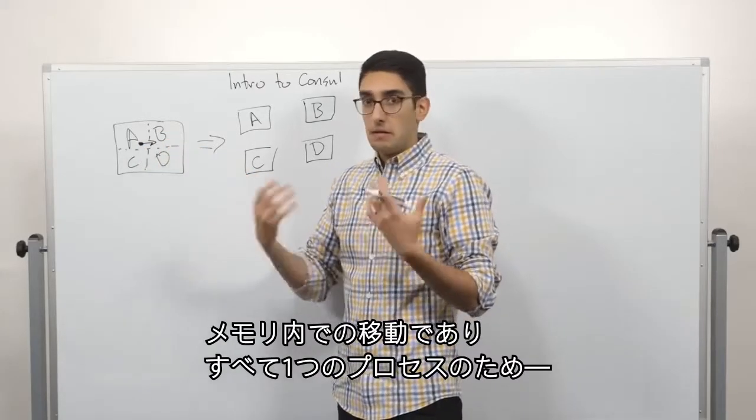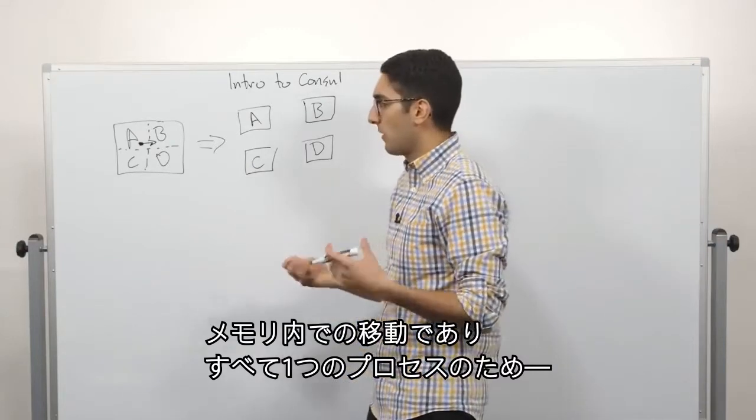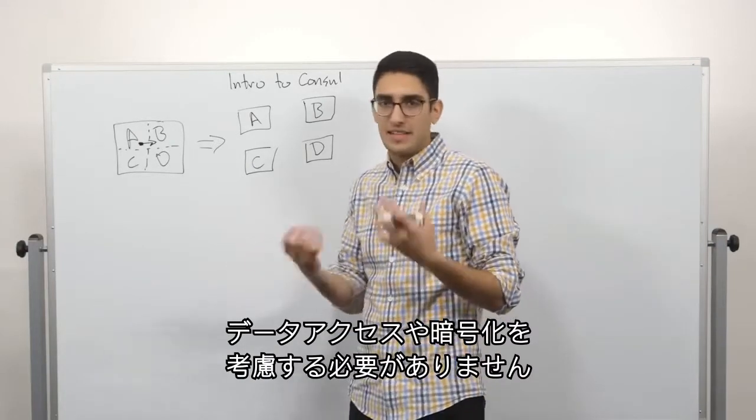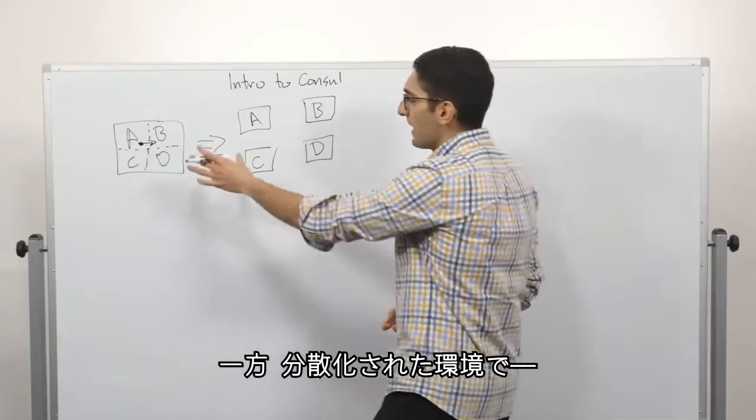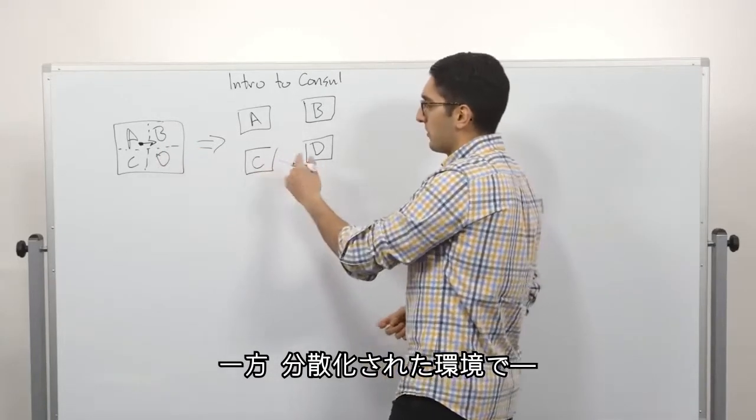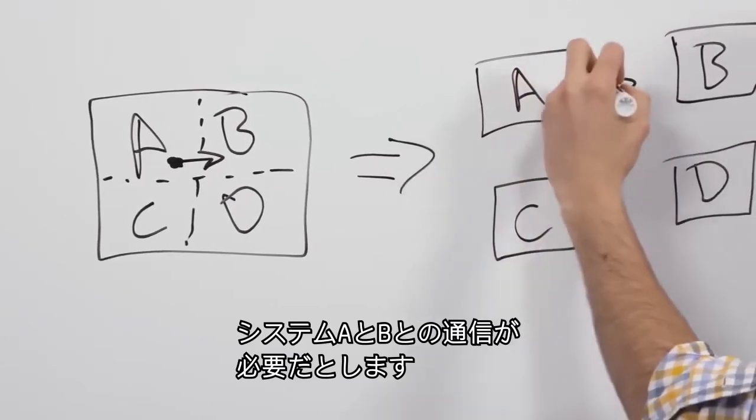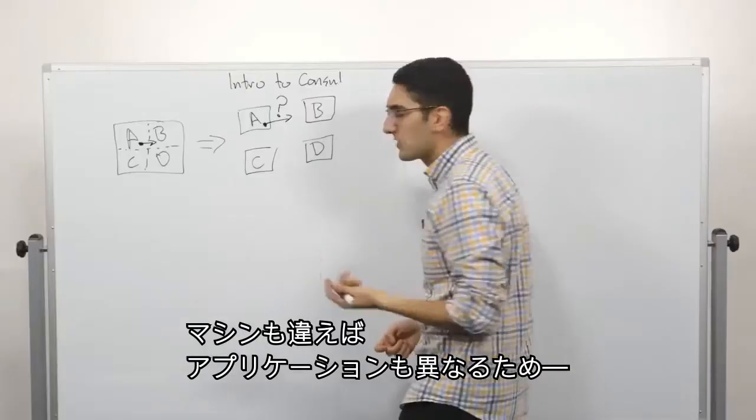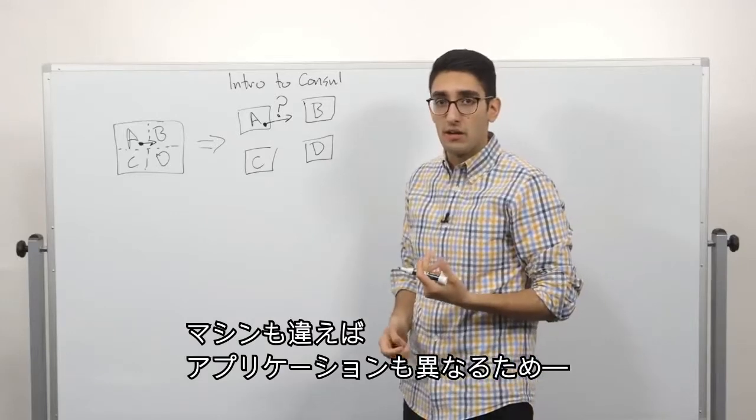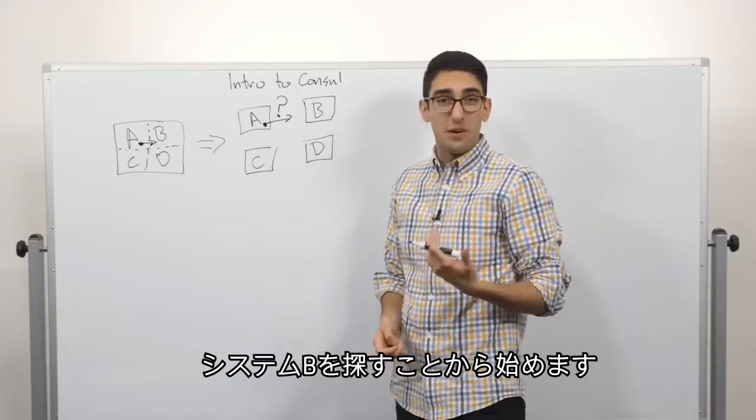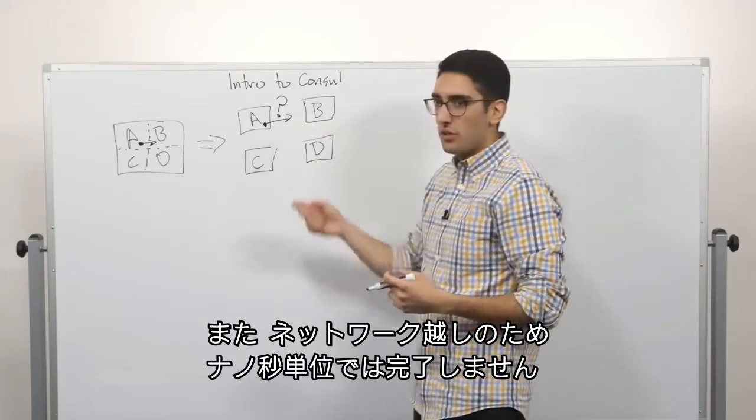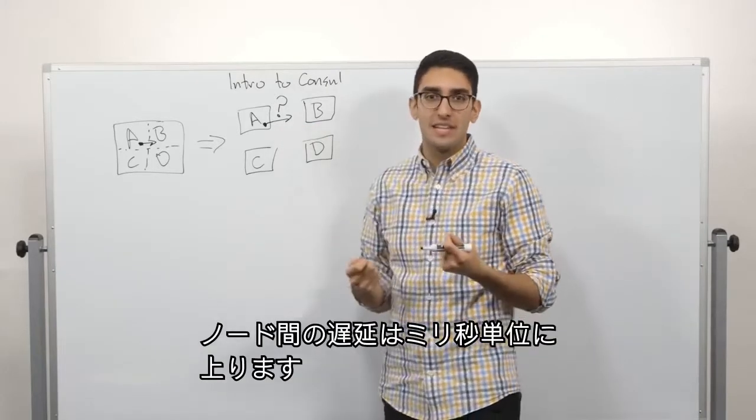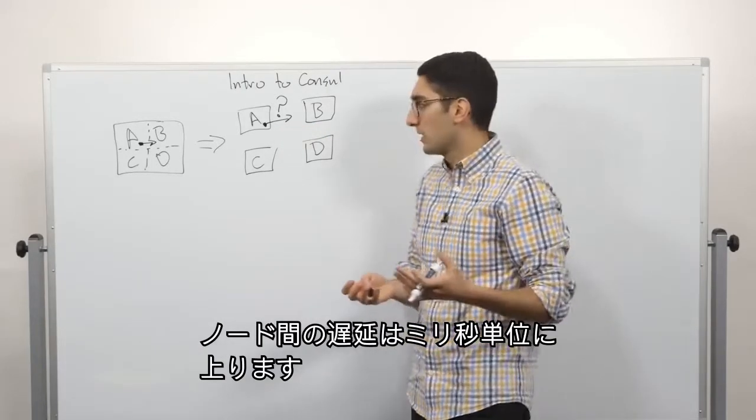We're doing an in-memory jump and it's all in process. So we don't worry about what happened to our data, how did the data get there, did we encrypt it? It's an in-memory function call. All of that changes as we come into this distributed world. So now we have system A that wants to talk into system B. Well, where is system B? It's no longer running on the same machine. It's no longer part of the same application. And because we're going over a network, it's no longer nanoseconds.